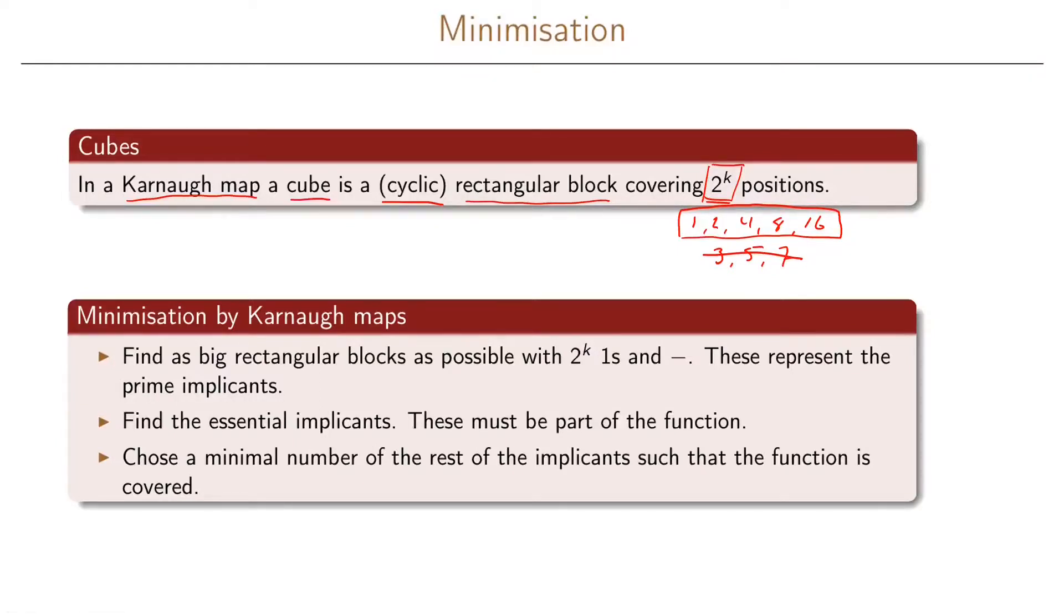So when we minimize our functions using Karnaugh maps, we do the following. So first we'll find as big rectangular blocks as possible with 2 to the k positions that are either ones or in the don't care set. And these will represent our prime implicants.